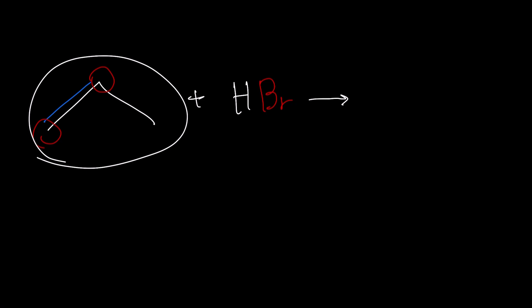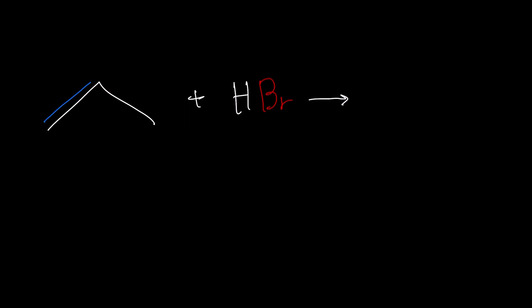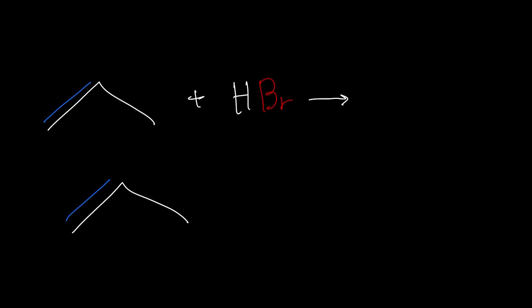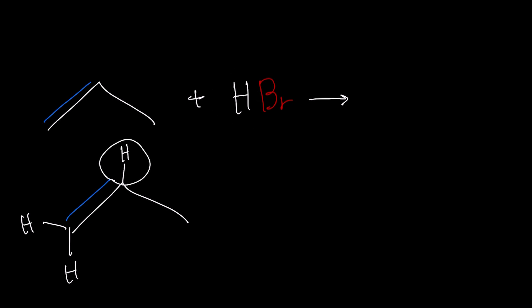Let's draw the invisible hydrogens in this structure. This carbon is attached to two other things, so if it has to be neutral, it must be attached to two hydrogens for it to have four in total. This one has one hydrogen attached. There is a concept called Markovnikov's rule where the carbon that has the most hydrogens — in this case the one on the left — is going to get the hydrogen, and the one that has the least hydrogens — the one on the right — is going to have the halogen.